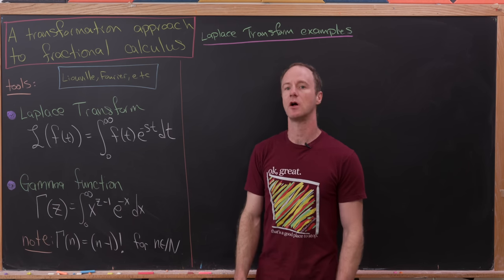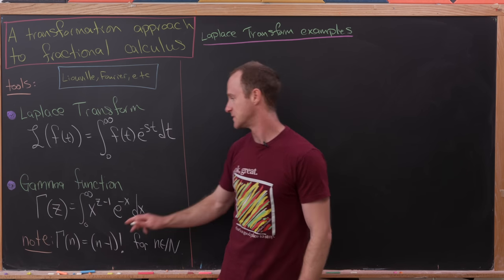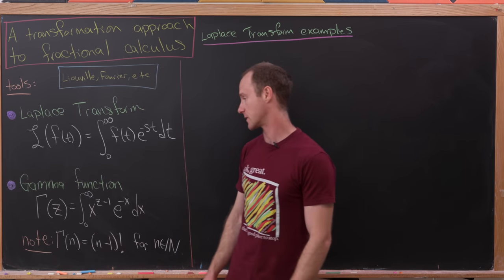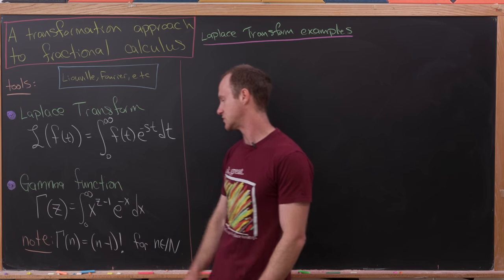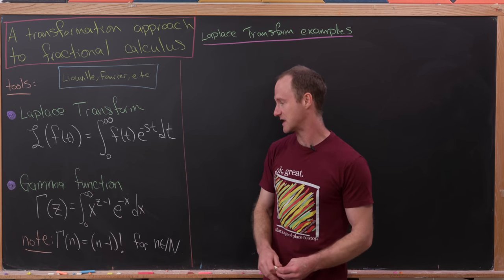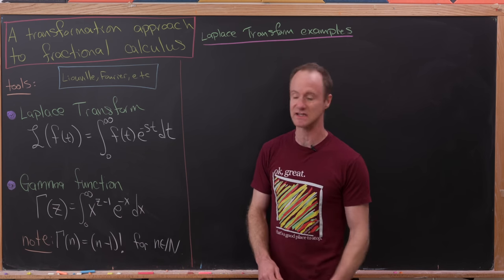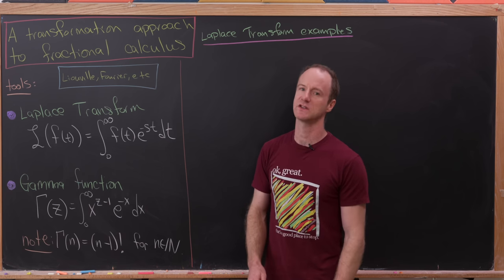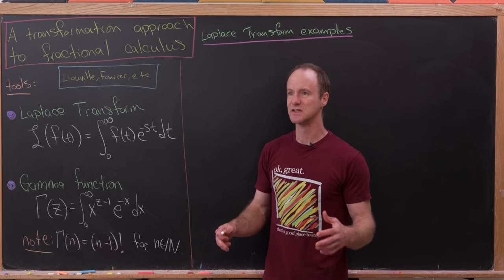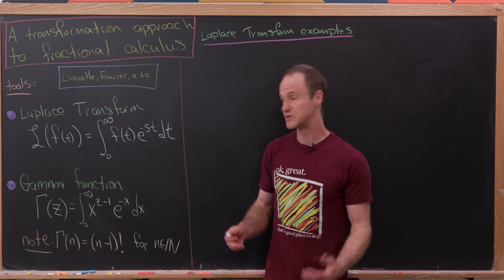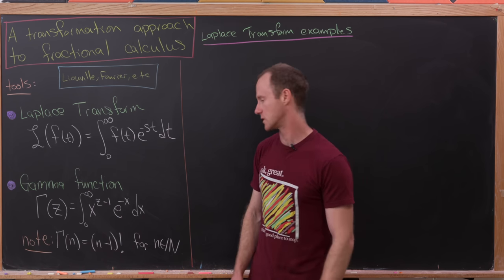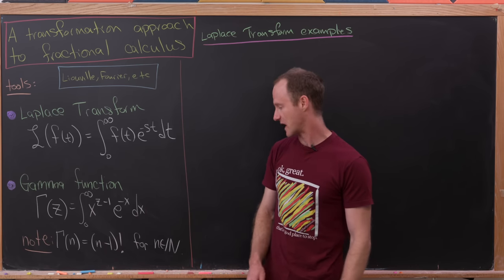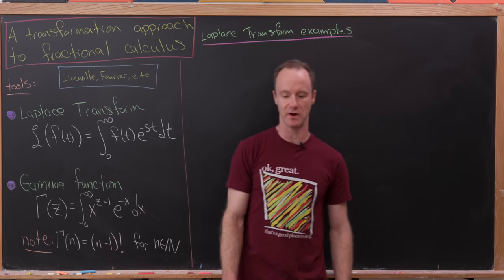We're also going to need something called the gamma function. Gamma of z, where z could really be a complex number, is the integral from 0 to infinity of x to the z minus 1 times e to the minus x dx. One of the really important parts of the gamma function is that it's a smooth generalization of a factorial. In particular, gamma of n is equal to n minus 1 factorial if we've got a natural number n.